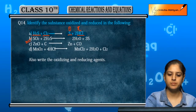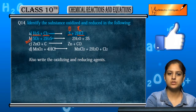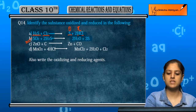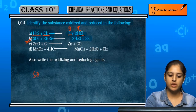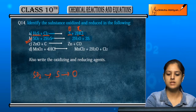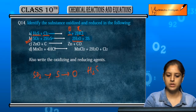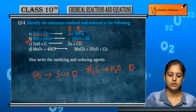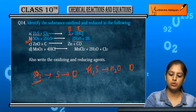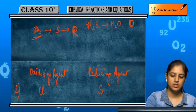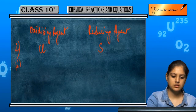Now the second part, B: SO₂ plus H₂S gives H₂O and 3S. SO₂ had oxygen, but the oxygen was removed, so SO₂ has been reduced. H₂S has been oxidized. So SO₂ is the oxidizing agent.